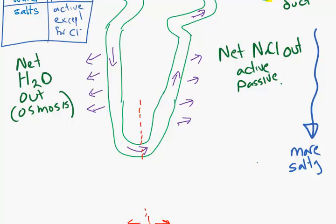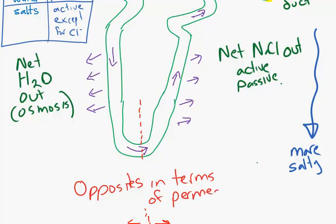And the other thing we should remember is that the two sides of the loop of Henle, the descending going down and ascending going up, are opposites in terms of permeability. This is probably obvious, but it's worth stating that the downside, the descending limb, only is permeable to water. Upside, only permeable to salts. The other stuff cannot move through it.